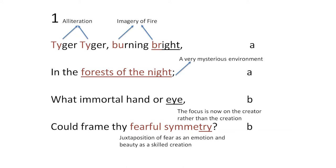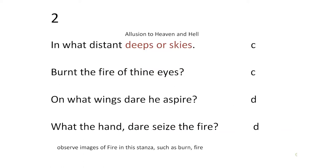Moving to the second stanza: 'In what deep, in what distant deeps or skies burnt the fire of thine eyes? On what wings dare he aspire? What the hand dare seize the fire?' The 'deeps' and 'skies' in the first line are an allusion to hell and heaven respectively — with 'deep' representing hell and 'skies' representing heaven. This is a point worth noting as a correction to the typical phrasing.